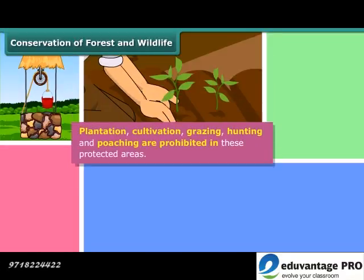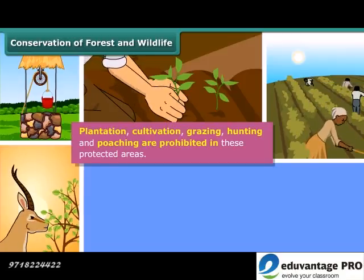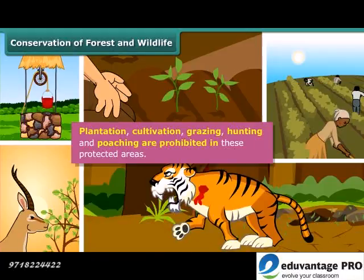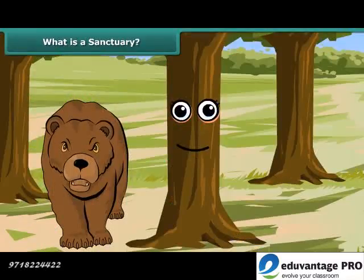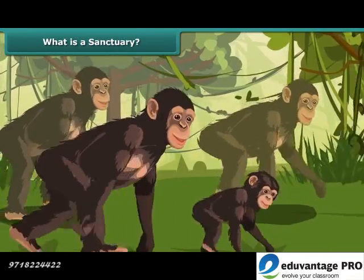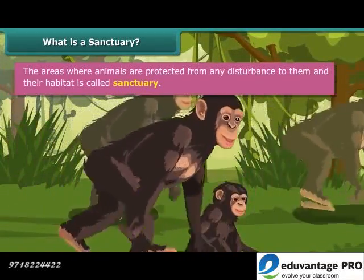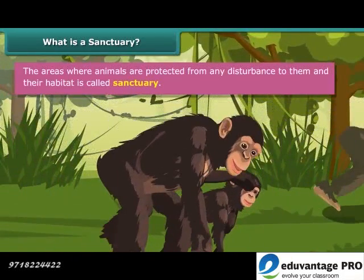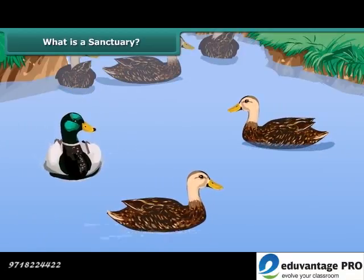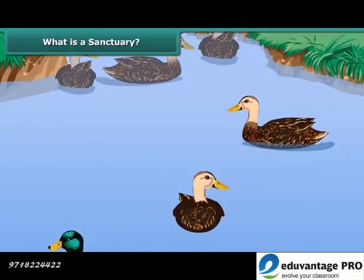You would be eager to know why these areas are so important. Plantation, cultivation, grazing, hunting and poaching are prohibited in these areas. We will now learn about the protected areas for plants and animals. The areas where animals are protected from any disturbance to them and their habitat are called sanctuaries. Wildlife sanctuaries provide protection and suitable living conditions to wild animals.